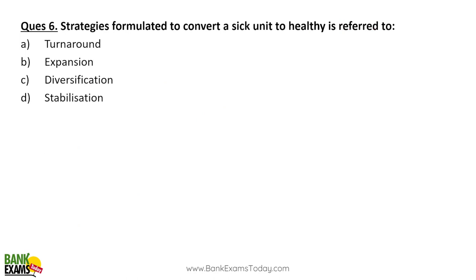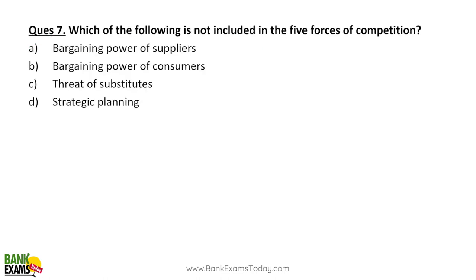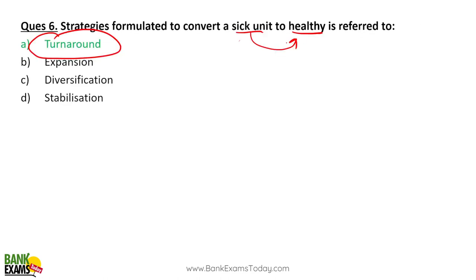A strategy formulated to convert sick units to healthy units is known as a turnaround strategy. Other strategies include expansion — increasing business activity — and diversification, where you start another business in addition to what you are currently doing.